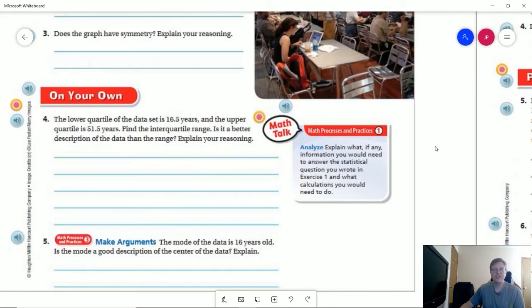Number four, they want us to find the interquartile range using the lower quartile of 16.5 and an upper of 51.5. That will give us an interquartile range of 35.